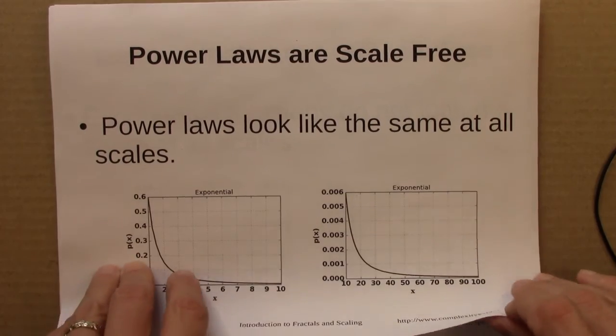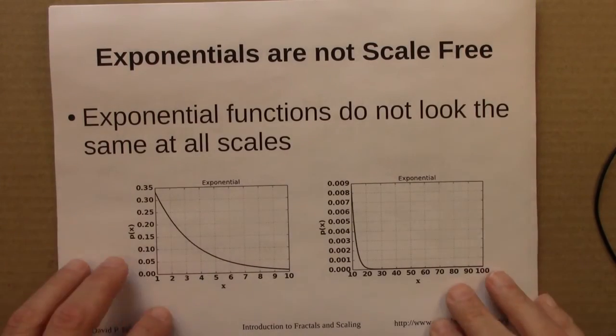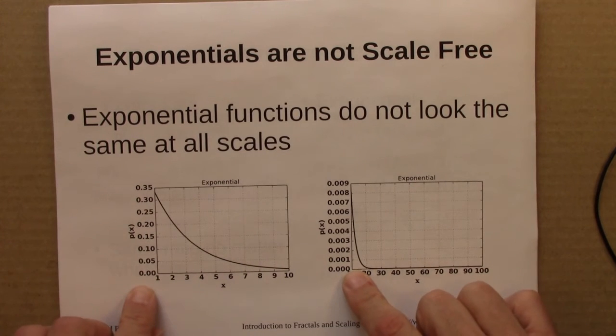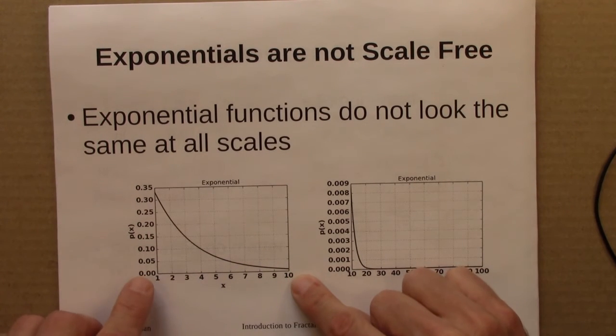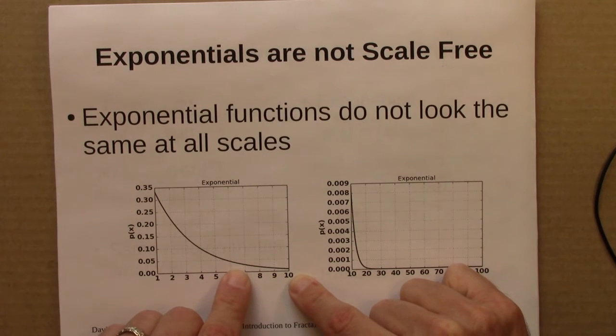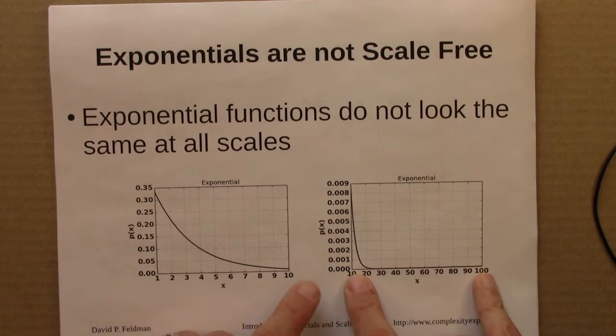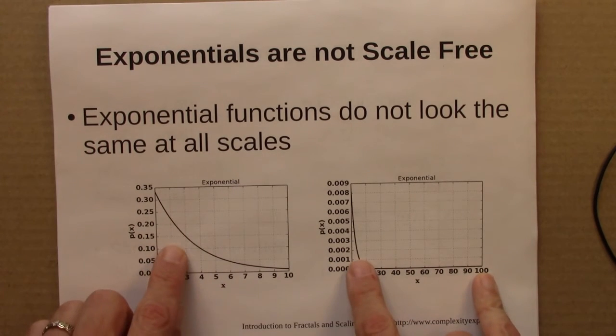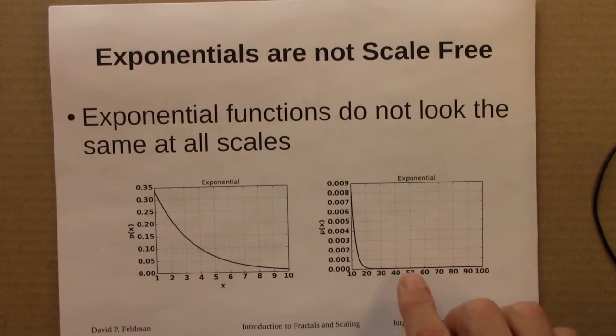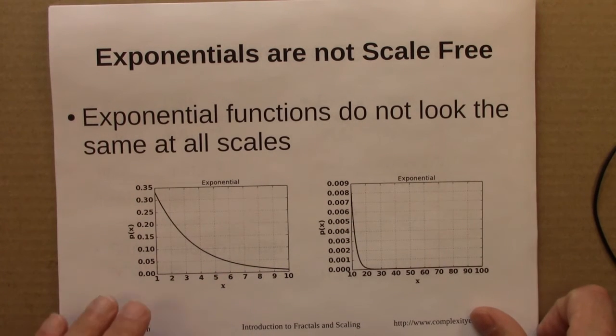Now, not all distributions are scale-free. Exponentials are a nice counter-example. So here is an exponential from 1 to 10. And the outcome gets less likely as x gets larger. And the same story is true here, but these curves don't look the same. So the sort of decrease in likelihood is not the same across all scales.